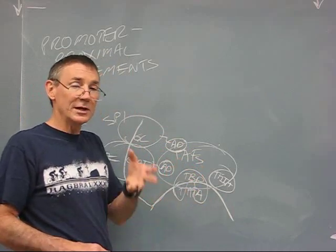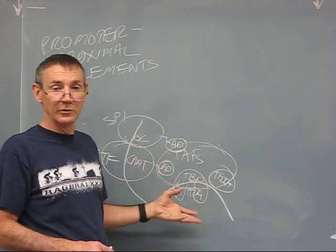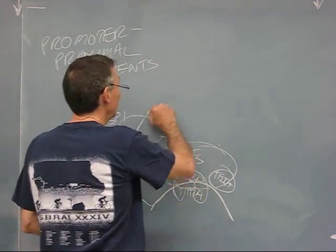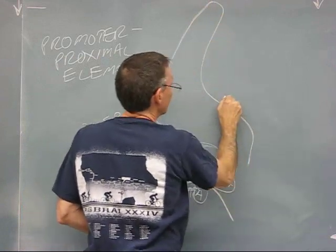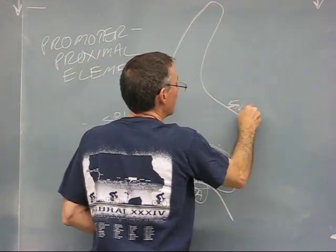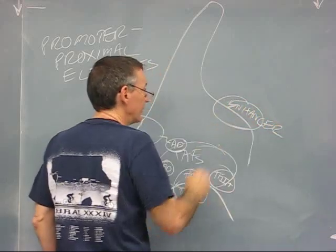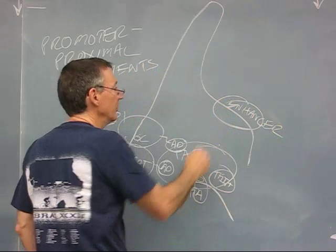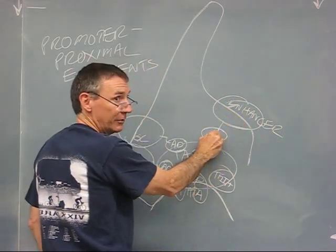How does this do this even when that enhancer element may be thousands of bases away? The DNA folds over. So you may have a big loop of DNA, and then here's an enhancer. Activator protein binds to the enhancer. Again, it has a DNA binding domain and an activation domain.